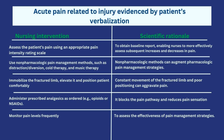The rationale for non-pharmacological methods is that they can augment pharmacological pain management strategies — they work best in combination with medications such as NSAIDs and opioids rather than alone. Next, immobilize the fractured limb, elevate it, and position the patient comfortably, because constant movement of the fractured limb without proper positioning may cause additional pain. Then administer prescribed analgesics such as opioids and NSAIDs, whose mechanism of action is to block the pain pathway and reduce the patient's sensation of pain.